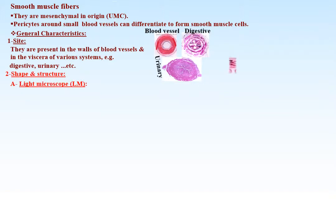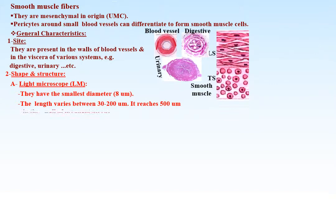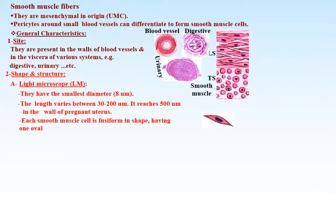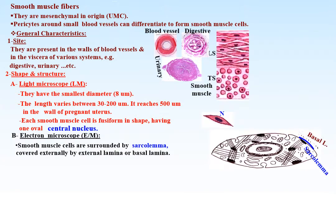By light microscope, smooth muscle fibers have the smallest diameter, about 8 microns. The length varies from 30 to 200 microns and may reach up to 500 microns in the wall of the pregnant uterus. Each smooth muscle cell is fusiform in shape with one oval, centrally placed nucleus.